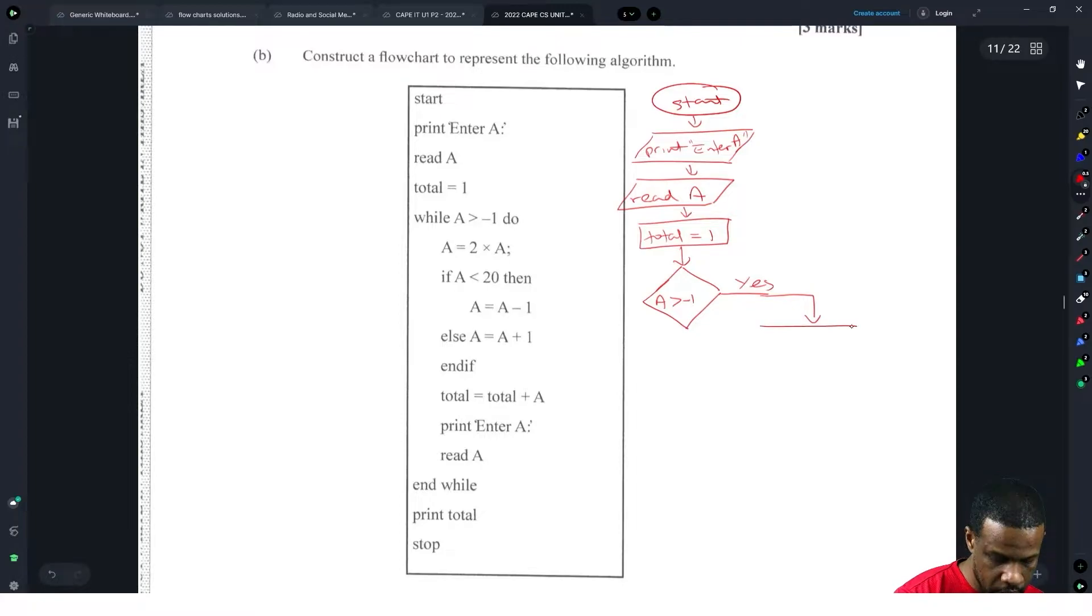That's our rectangle, called that process. A is equal to two by A. And then there are if, so the if is going to be a diamond. Now the diamond is going to make a choice. Choice is going to be if A is less than 20. If A is less than 20, the answer is yes. What do you do? You are going to say A is equal to A minus one, rectangle. And then you have an else, so we're going to put in no. The decision will be A is equal to A plus one.